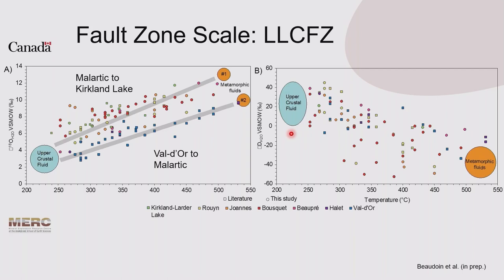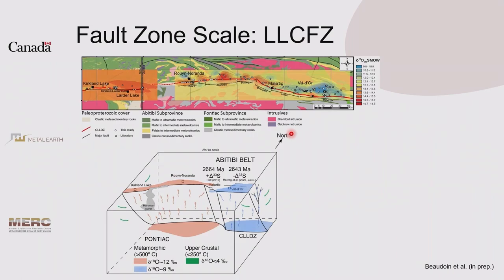In a cartoon summary, we have the Larder Lake-Cadillac break with two different fluid reservoirs. The switch occurs somewhere where the fault changes strike, and from Malarctic all the way to Kirkland Lake, similar compositions suggest different reservoirs from those to the west — but I won't go into those differences in detail today.